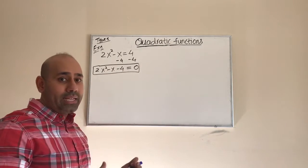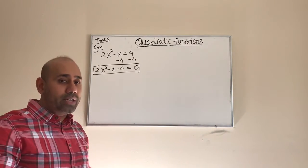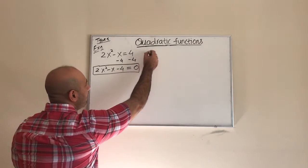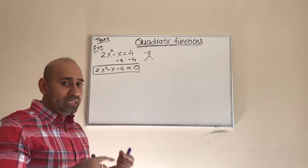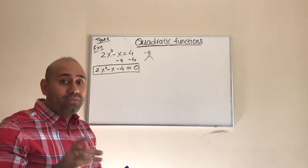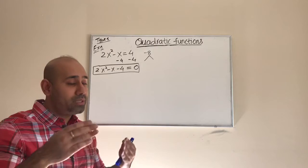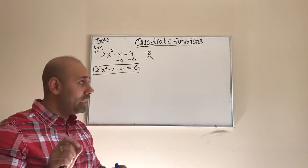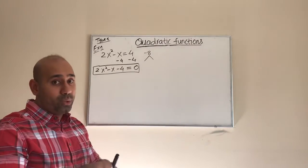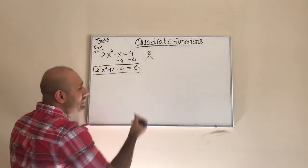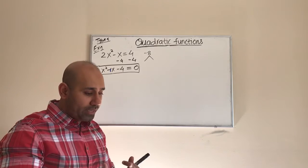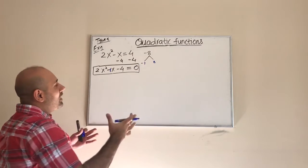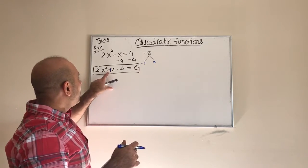This is now in standard form: ax squared plus bx plus c. From my previous videos, you know the factoring method. We take the leading coefficient 2 and multiply by negative 4 to get negative 8, then try to find two factors of negative 8 that add up to negative 1 — the middle term coefficient. First I try negative 1 and 8: they multiply to negative 8, but add to 7, not negative 1. That does not work.